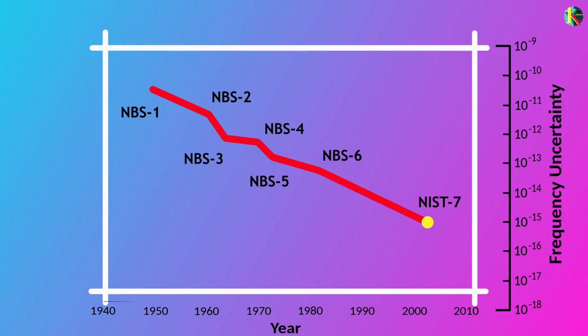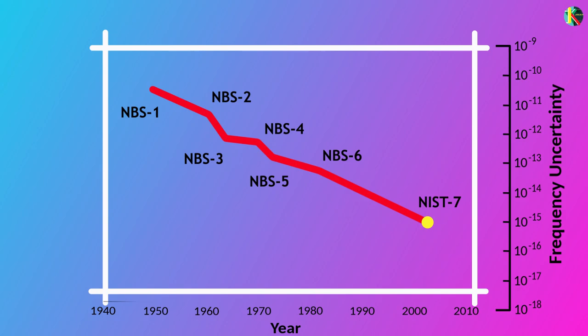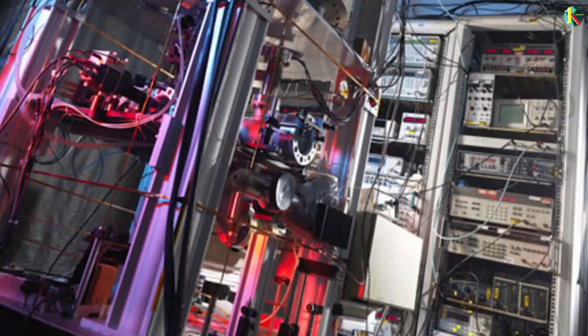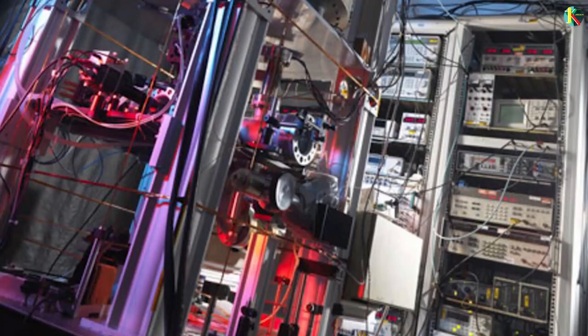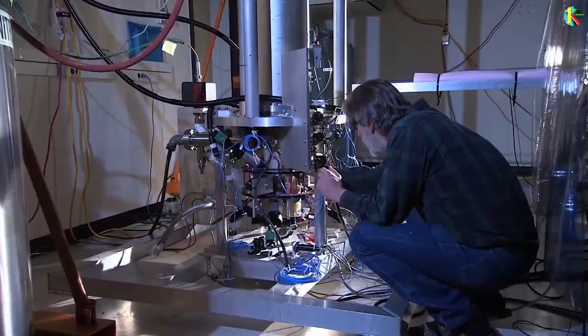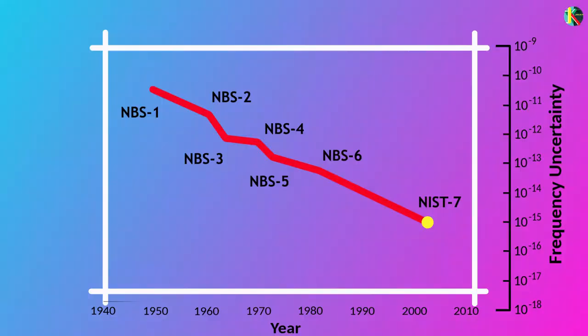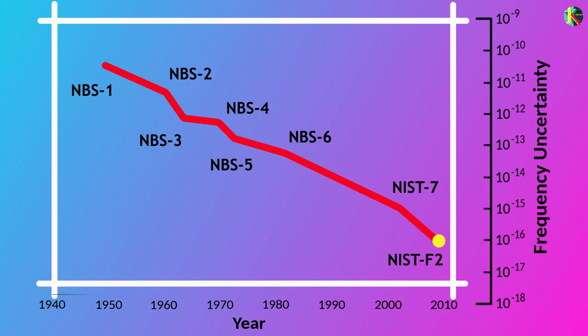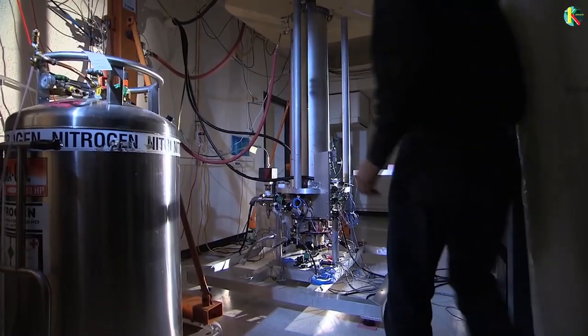The goal of an atomic clock with 10 to the power minus 16 accuracy was first reached at the United Kingdom's National Physical Laboratory's CSF2 Cesium Fountain clock and the United States NIST-F2. The increase in precision from NIST-F1 to NIST-F2 is due to advances in liquid nitrogen cooling technology for atoms. But scientists are pushing the boundary of accuracy in time measurement.